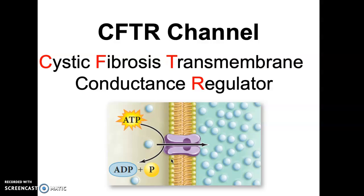It's called the CFTR channel — cystic fibrosis transmembrane conductance regulator. It takes chloride ions and uses ATP to actually transport that chlorine out of the cell. For example, in the cells that line your trachea, it transports chloride out from that cell and into the lumen — the air portion of the trachea.